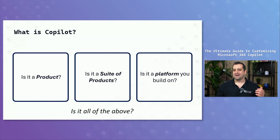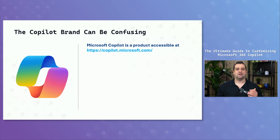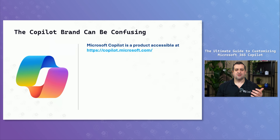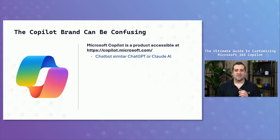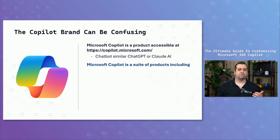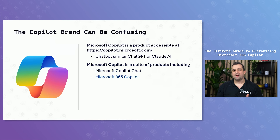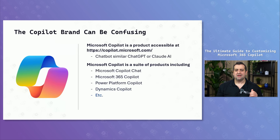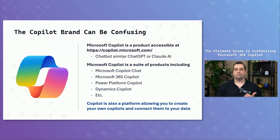First of all, Copilot is a product that you access at copilot.microsoft.com, or a different URL for enterprises, and that product is in a way like a chatbot, very similar to ChatGPT or Claude AI. It's also a suite of products, because we have Copilot Chat, Microsoft 365 Copilot, Copilot in the Power Platform, Copilot in Dynamics, and many more. But more importantly, we talk so much about agents right now, which are built on top of Copilot.